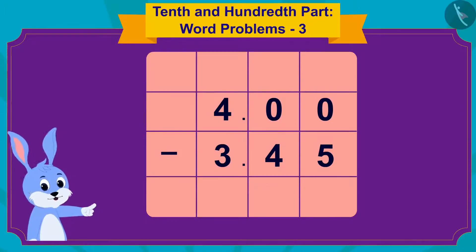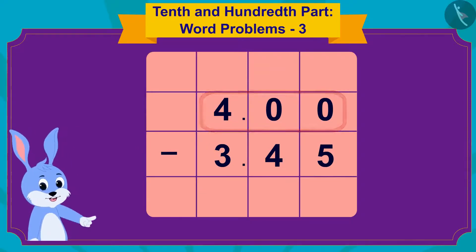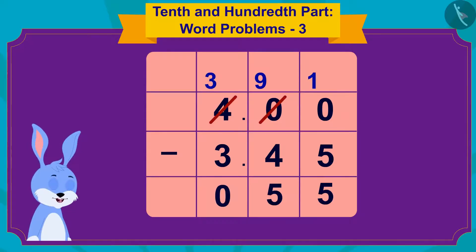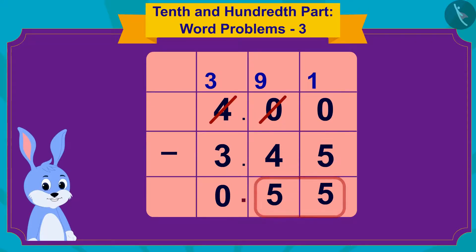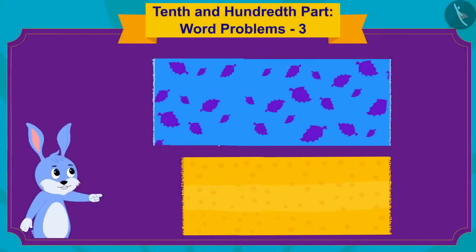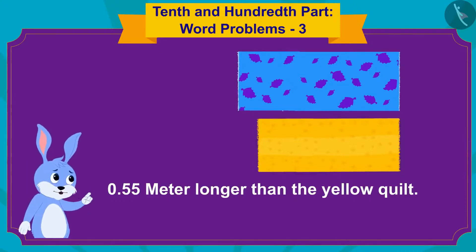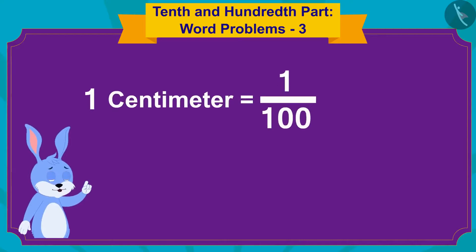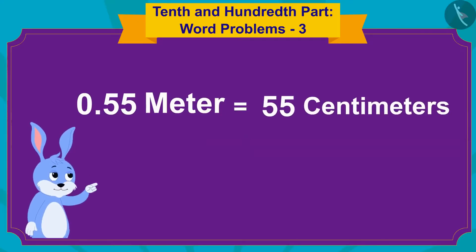Now I will subtract 345 from 400 using this simple process of subtraction. That makes it 55. Because there are two digits after the decimal point, I will write the decimal point in the answer so that there are two digits after the decimal point. The blue quilt is 0.55 meter longer than the yellow quilt. And because a centimeter is the 100th part of a meter, 0.55 meter will be equal to 55 centimeters.